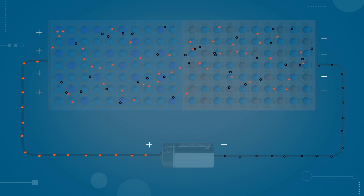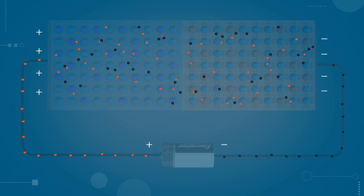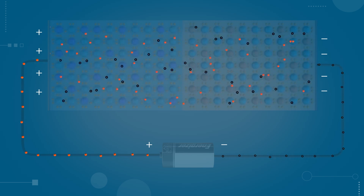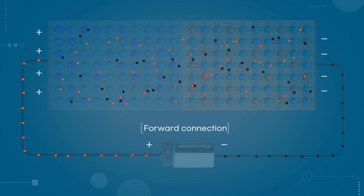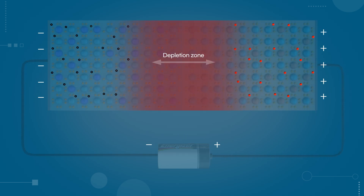To make current flow, a voltage with the same polarity is applied, which is referred to as a forward connection. Conversely, a direction that prevents current from flowing is called a reverse connection.